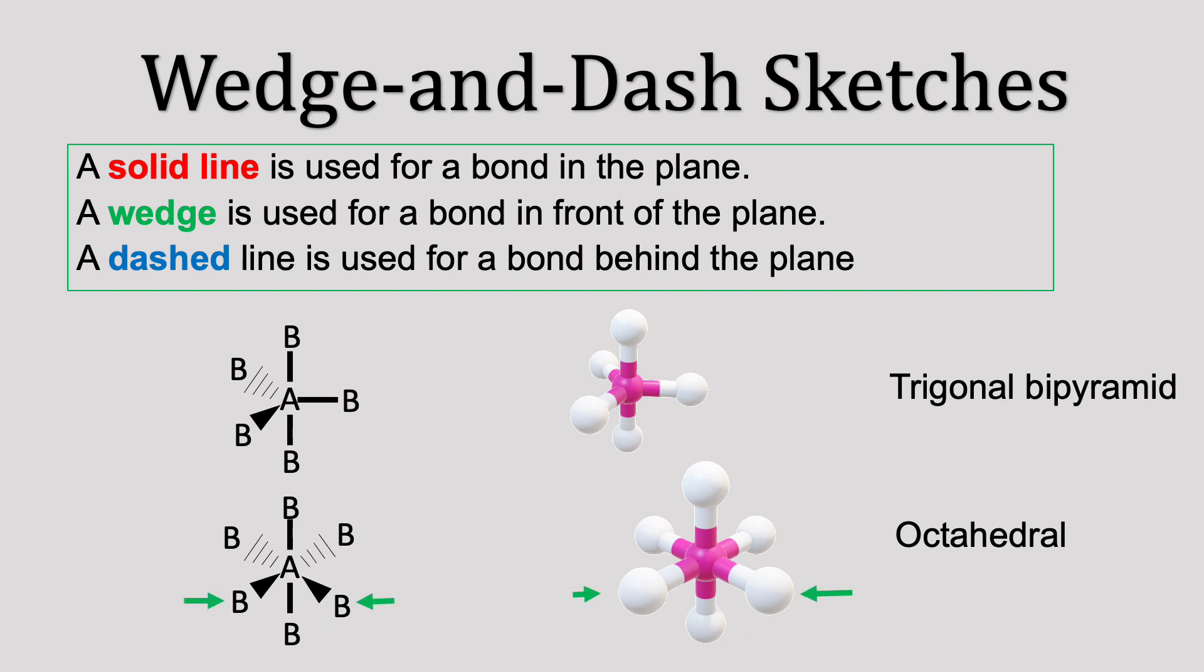There are two wedges coming out of the screen and towards you, and two dashed bonds going toward the back of your screen, away from you.